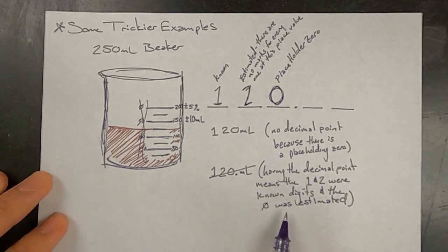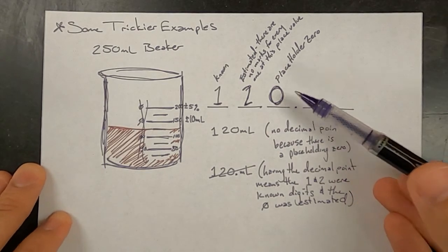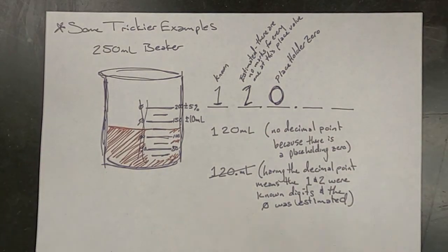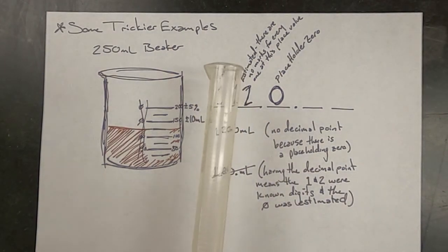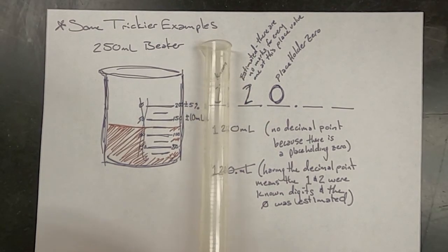And this was not the case. Remember, we had to estimate the two. And so the zero was a placeholder. It was not an estimated digit. We'll look at one last example. Again, it's tricky. This is a 10 milliliter graduated cylinder. And I'm going to draw it for clarity.